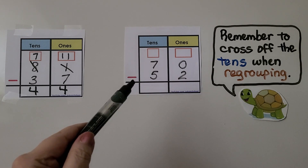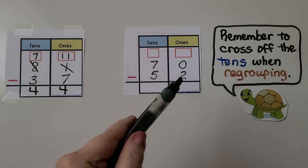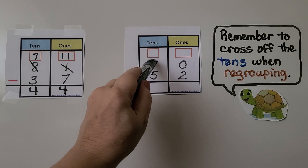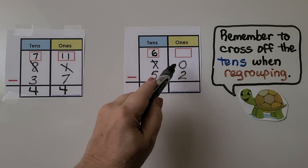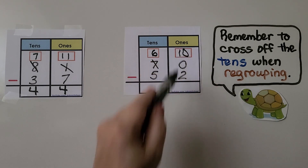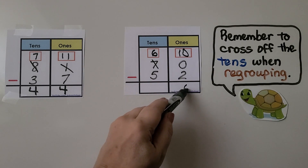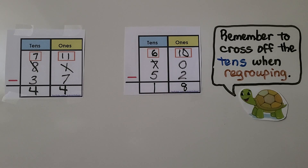Here we have 70 minus 52. We have 0 ones and we need to take 2 away, so we don't have enough. We need to cross off the 7 and make it a 6, and give the 10 to the ones. Now instead of 0 ones, we have 10 ones. 10 ones minus 2 ones is 8 ones. And 6 tens minus 5 tens is 1 ten. That means 70 minus 52 is equal to 18.